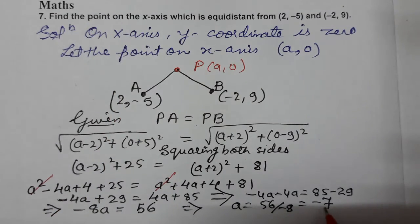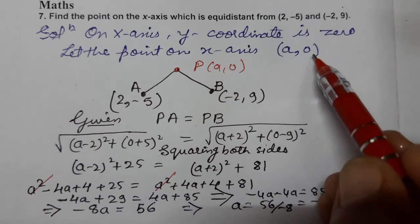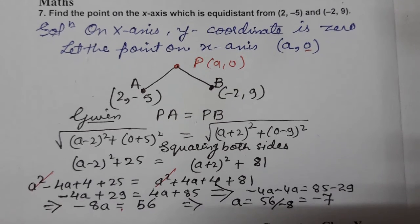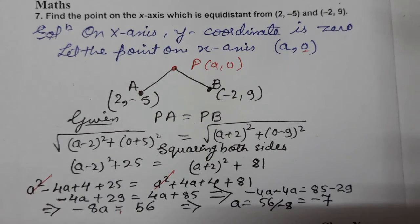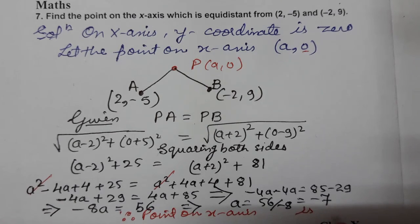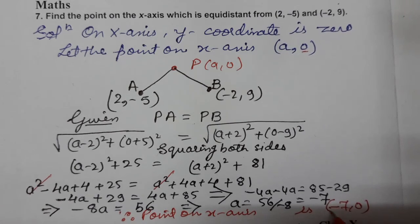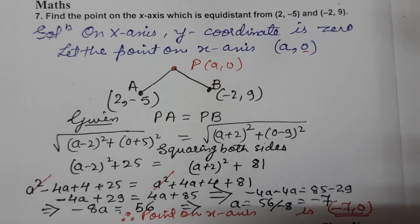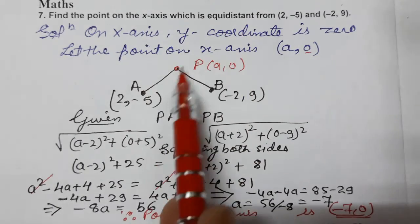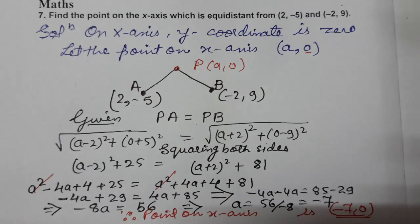We had to find the point on the x-axis. We needed only 'a' since y-coordinate is already 0. Therefore, the point on the x-axis is (−7, 0). This is our answer — the point on the x-axis equidistant from (2, −5) and (−2, 9). PA = PB is satisfied. I hope you understood. Thank you so much for watching the video.